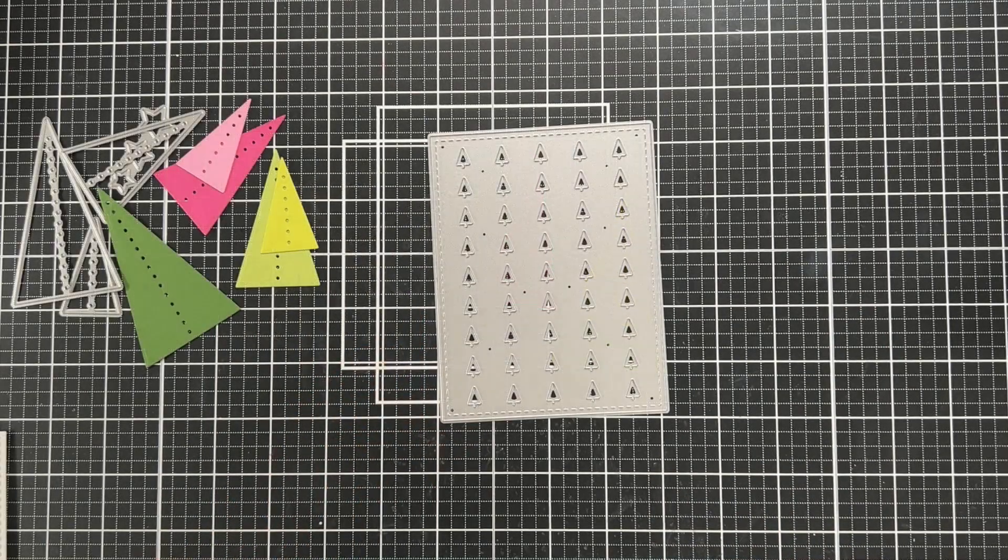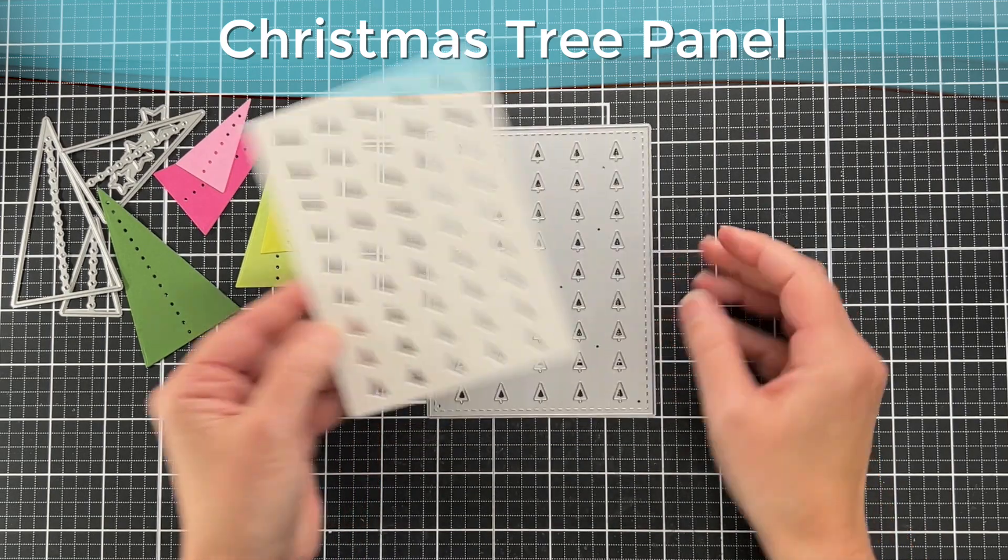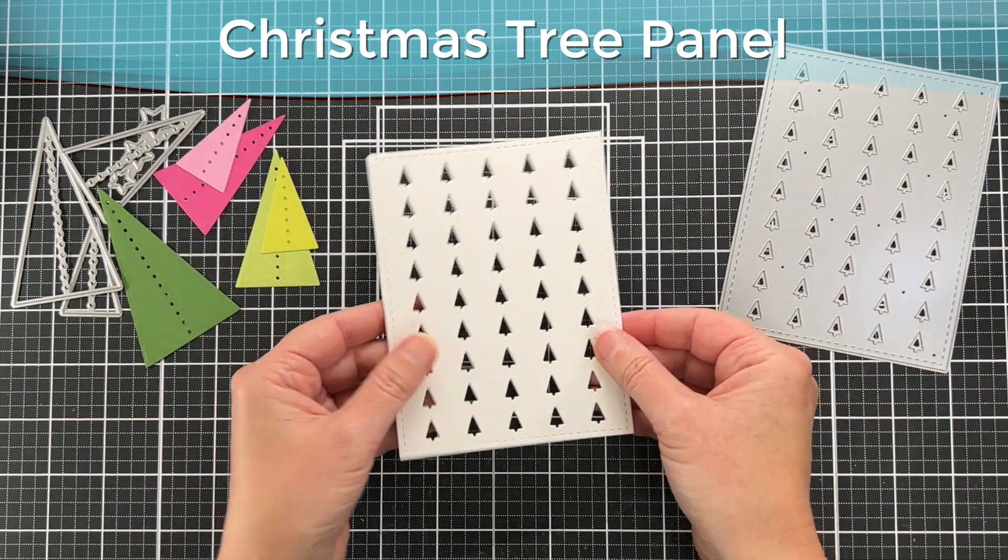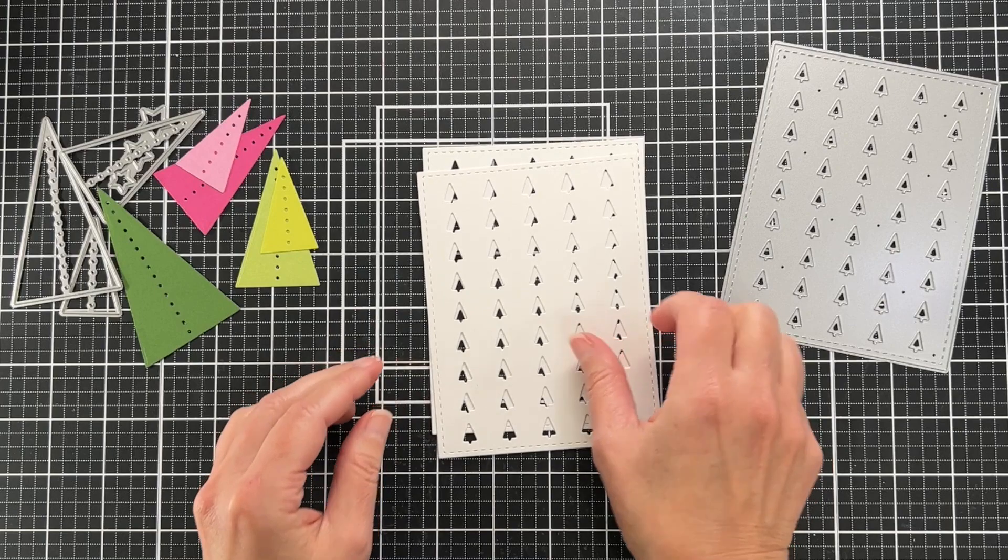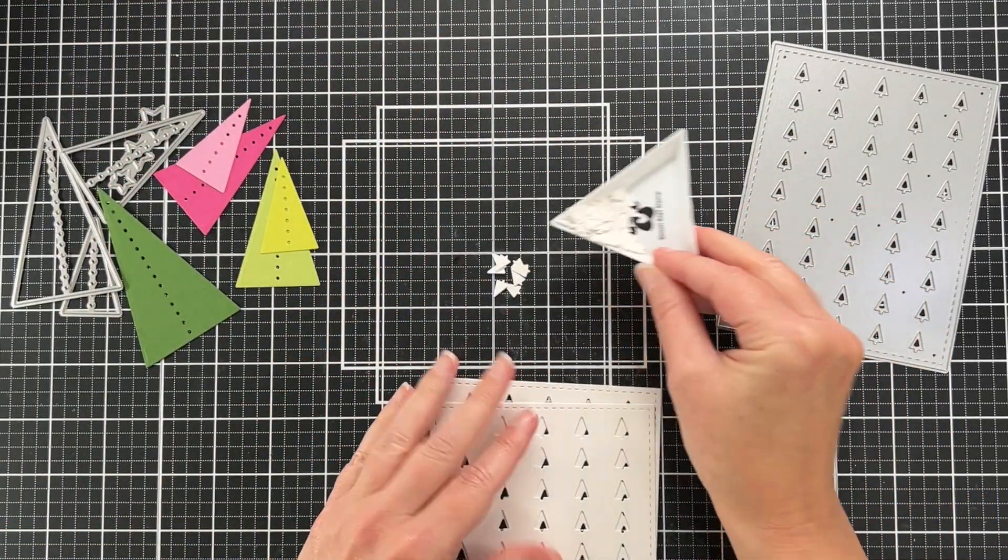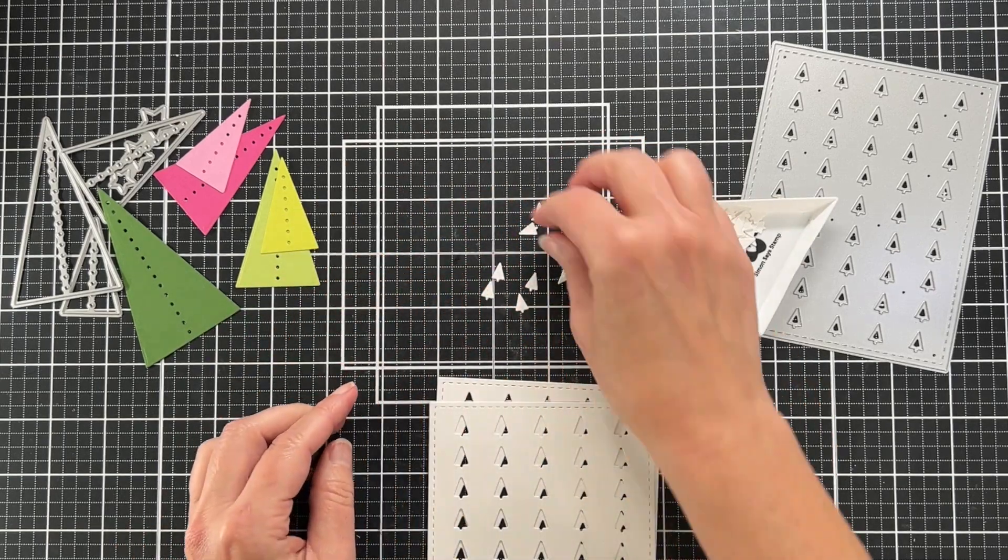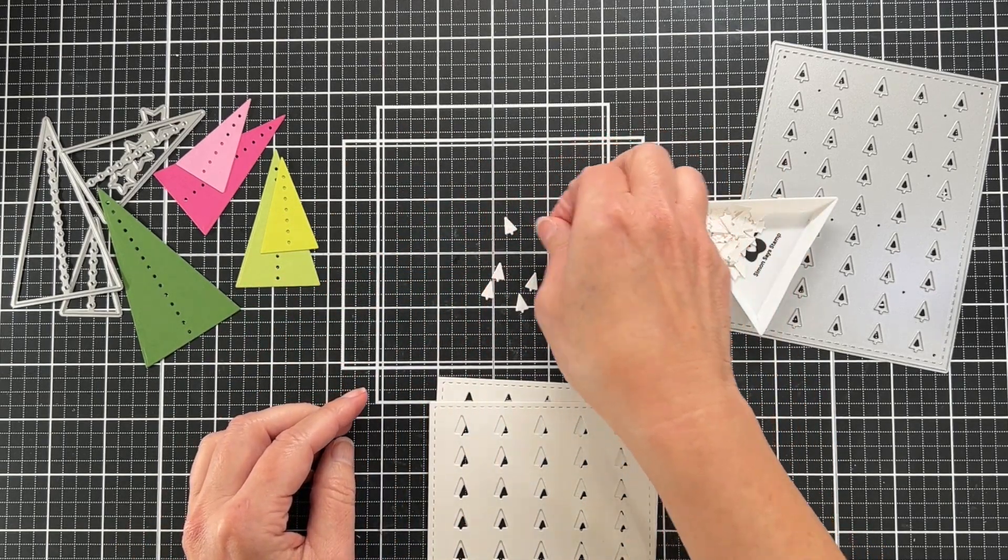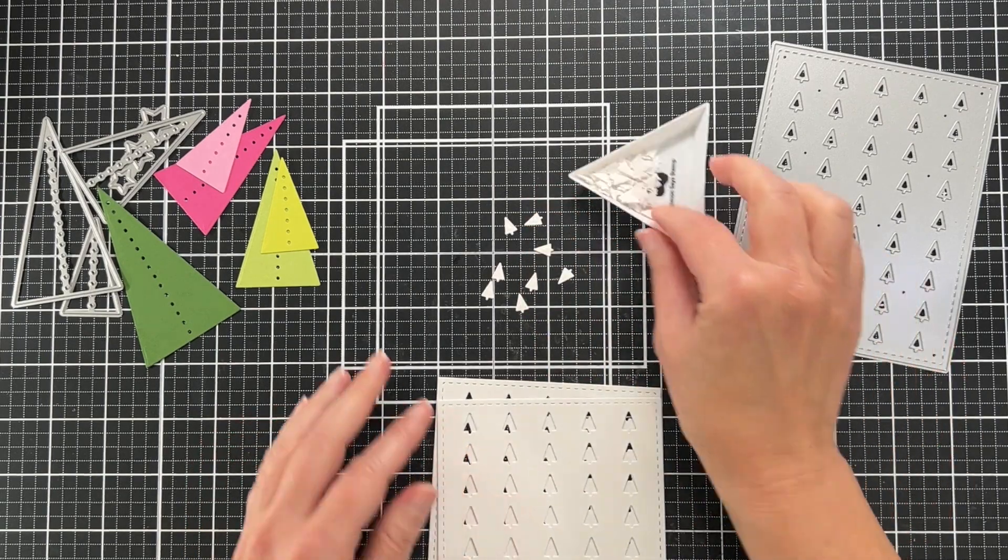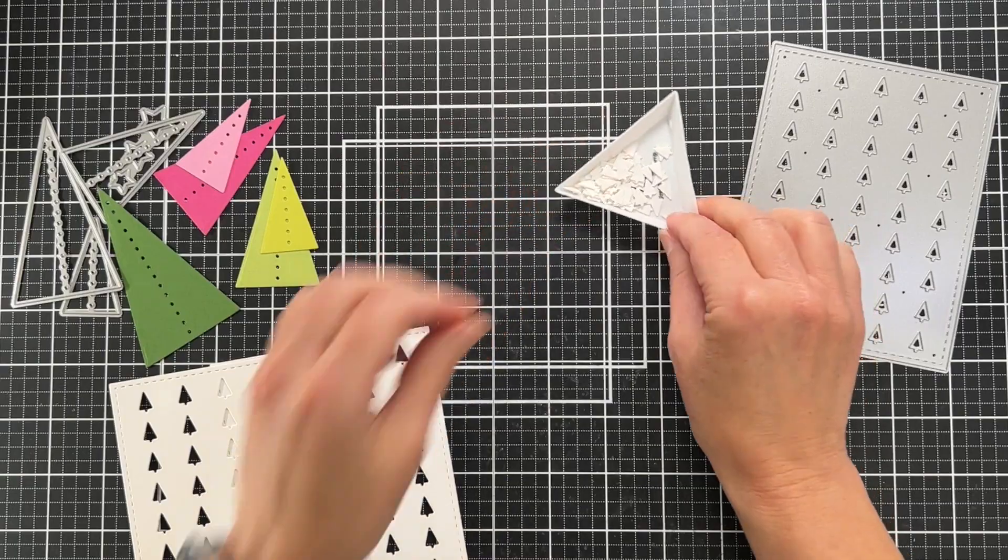Before we do that, we're going to start with our panel. This is a Christmas tree panel die, an oldie but a goodie, probably several years old. I just cut it out of white cardstock twice. The little trees that pop out when you die cut, I'm not going to throw those away because you never know when you want little tiny trees on your cards.